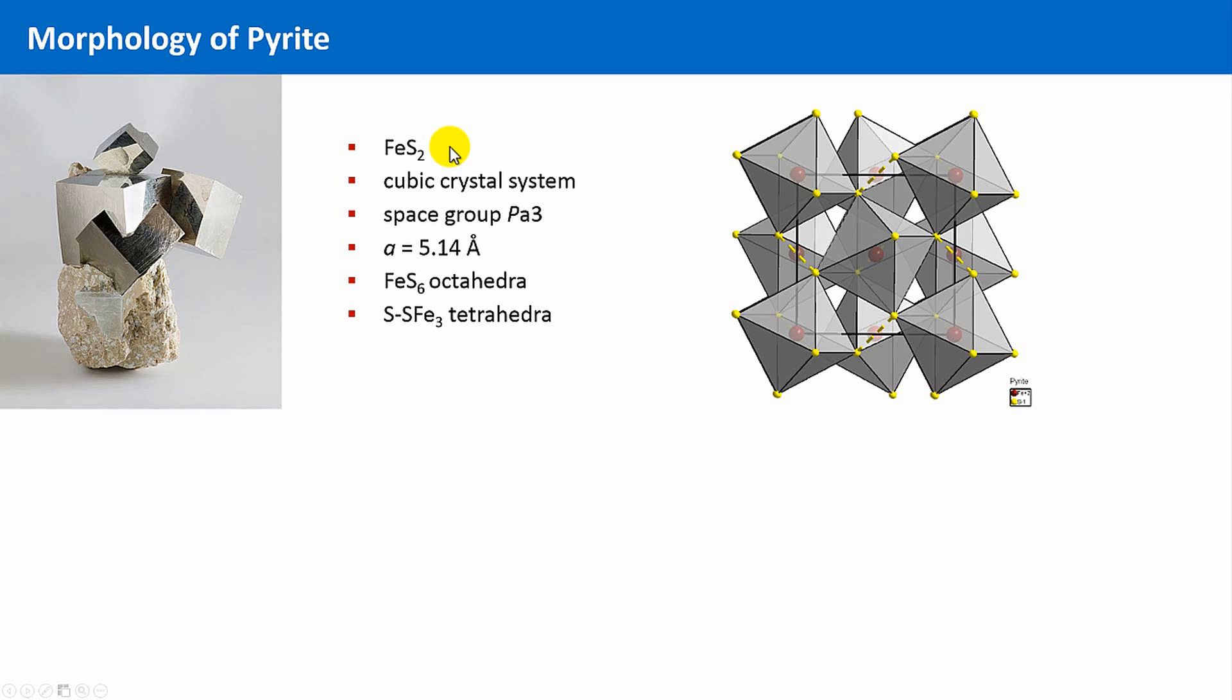Pyrite chemically viewed is iron disulfide. It belongs to the cubic crystal system with the space group Pa3. Here, a picture of the unit cell is shown. The structure can be interpreted as a derivative of the rock salt structure. The iron ions are equivalent to the sodium ions, but instead of chlorine anions, we have such S2 2- dumbbells, resulting in an octahedral coordination sphere of the iron, and the tetrahedral coordination sphere of the sulfur species.